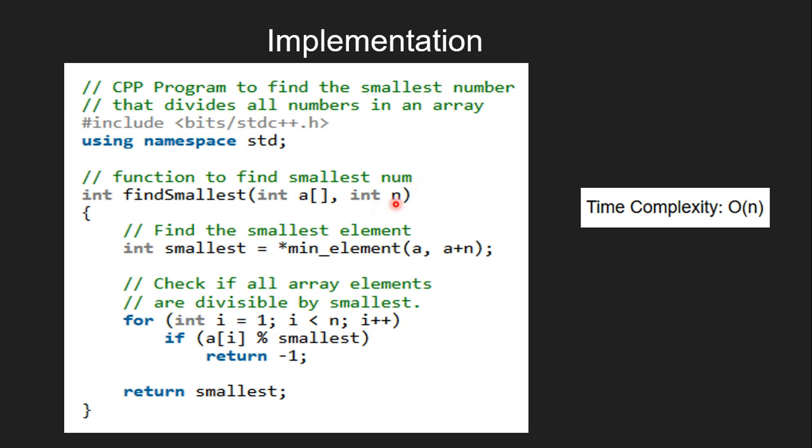Inside the for loop, we scan for each element whether it is divisible by the smallest one or not. Inside the if condition, if it is not divisible, we return -1.